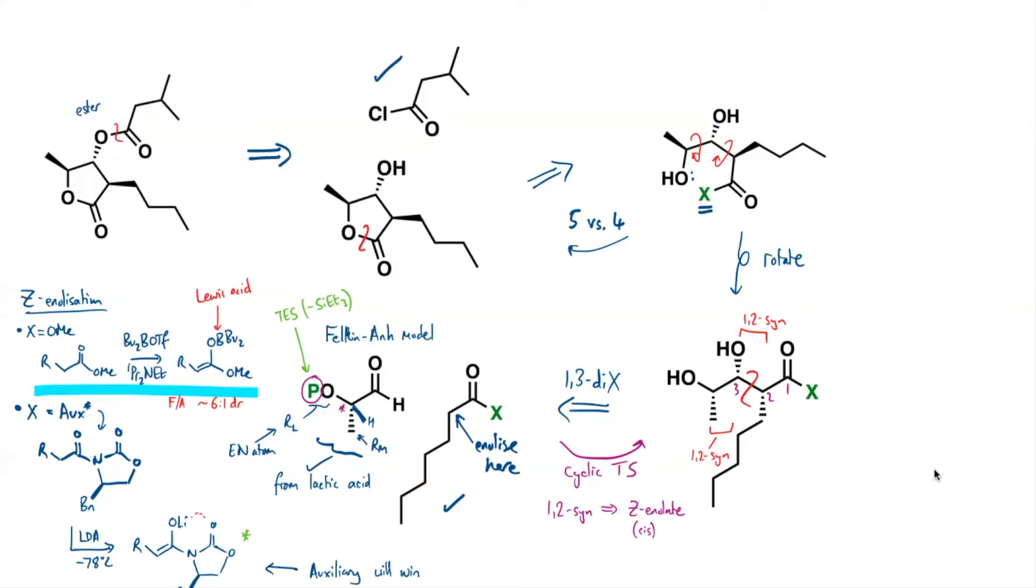Okay. So just to join the dots, we're saying that we can use some sort of aldol reaction. And then I'm going to need to take my TES protecting group off. So maybe I could use some sort of aqueous acid would be an option, or we could use a fluoride source, I guess, like TBAF. Okay. Rotating this molecule around to give me the reactive conformer, I'm pretty happy that a five-membered ring will form in preference to a four-membered ring. So I need to find a way of cyclizing this. So we've got two options.